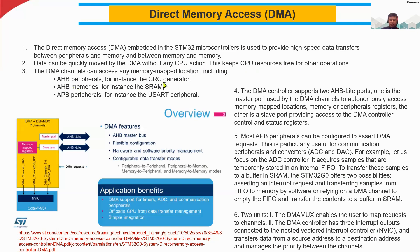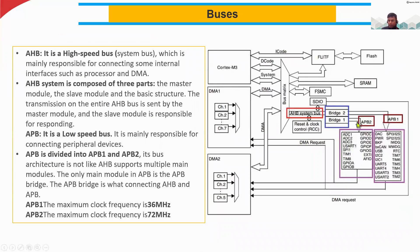DMA channels can access any memory map location including AHB peripherals — for example CRC generators, clock signal generators, AHB memories such as SRAM and flash memories — and also APB peripherals. The APB is connected to all the peripherals, which we had seen in the architecture. Everything goes through these AHB and APB buses — high-speed and low-speed buses. Each microcontroller has several DMA modules and each DMA module has several channels.